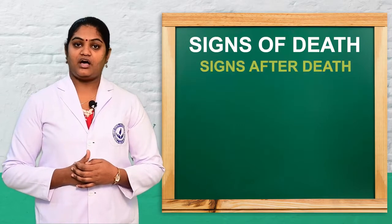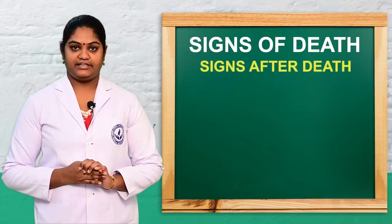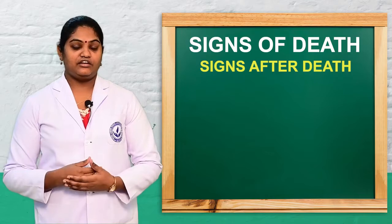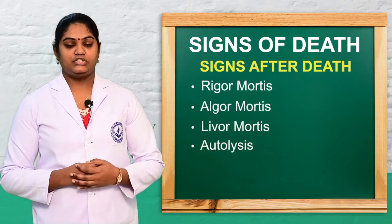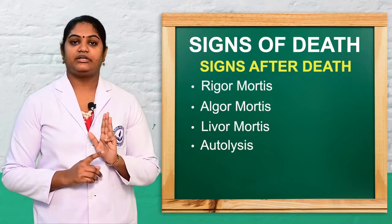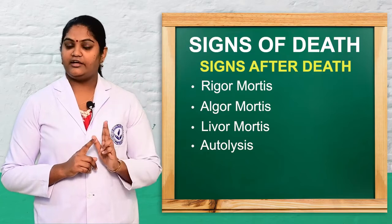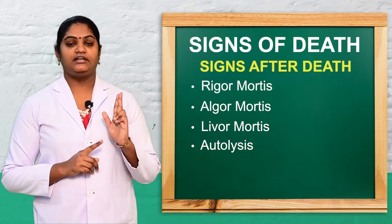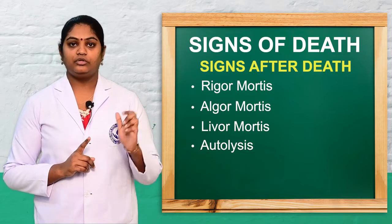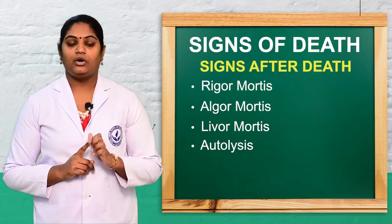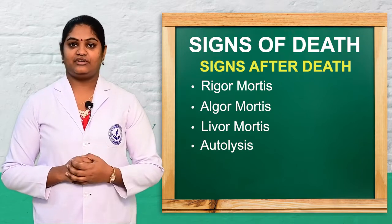After death, there are four main signs we can use to confirm death. The first one is rigor mortis, the second is algor mortis, the third is livor mortis, and the fourth is autolysis. We will discuss each one.